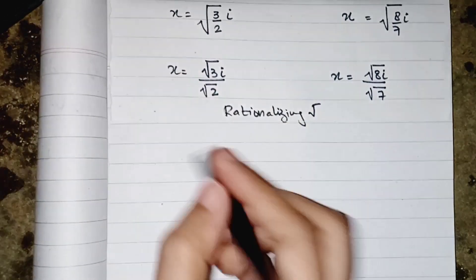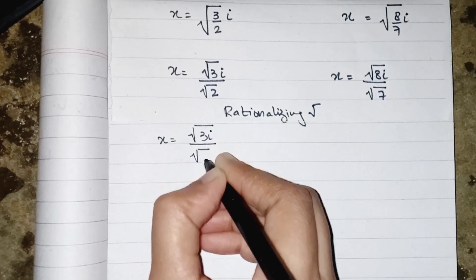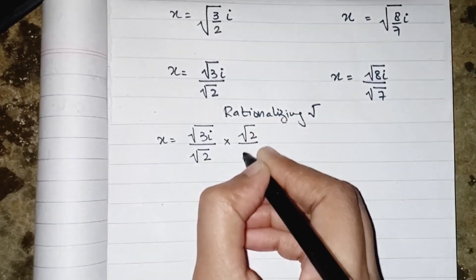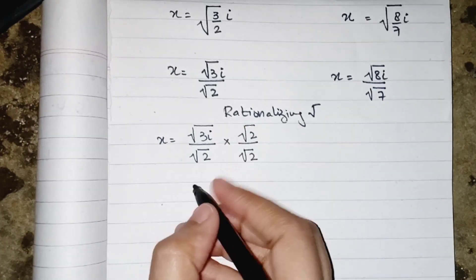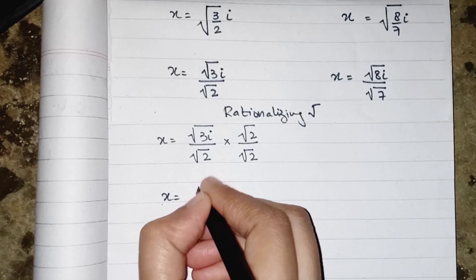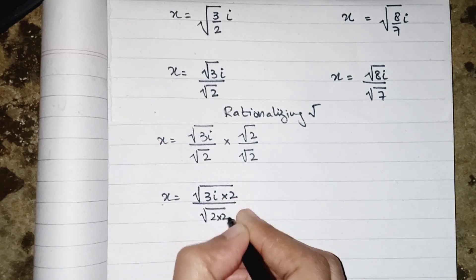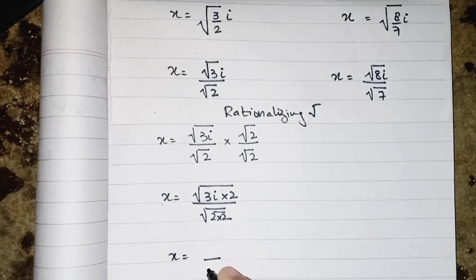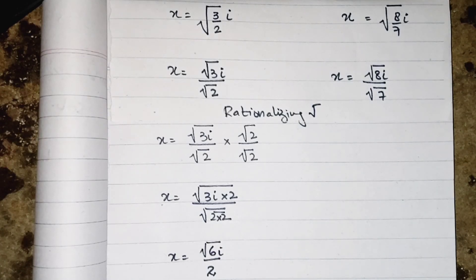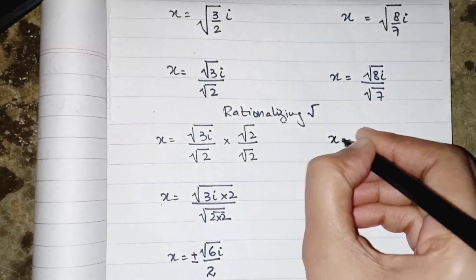To rationalize, we multiply and divide by the denominator's root. For x = (√3 · i)/√2: multiply numerator and denominator by √2. Then √2 × √2 = 2, which comes out of the root, and √3 × √2 = √6. So the rationalized form is x = ±√6 · i / 2.